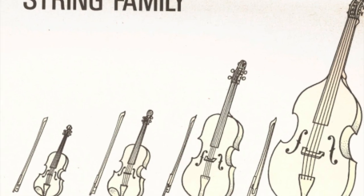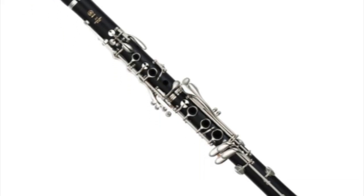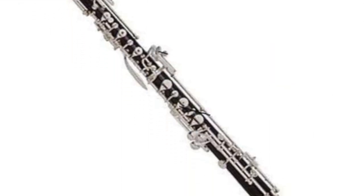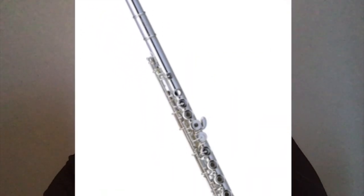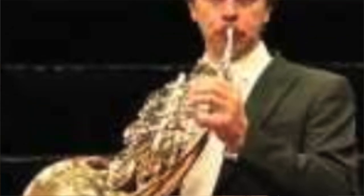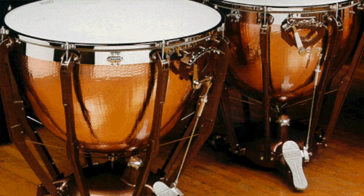Like you heard in the story video, the strings family represents Peter, the clarinet represents the cat, the oboe represents the duck, the flute represents the bird, the bassoon represents the grandfather, the French horn represents the wolf, and the timpani drums represent the hunters.